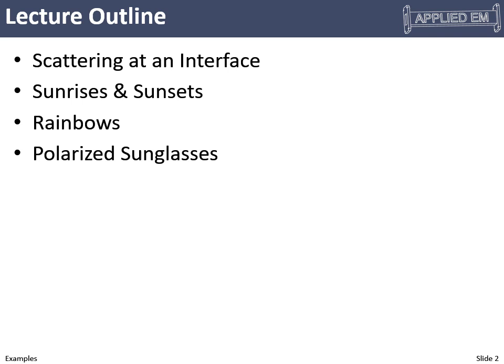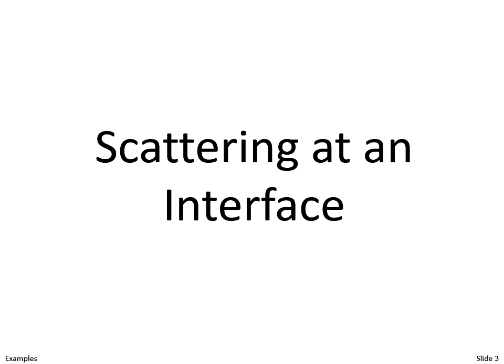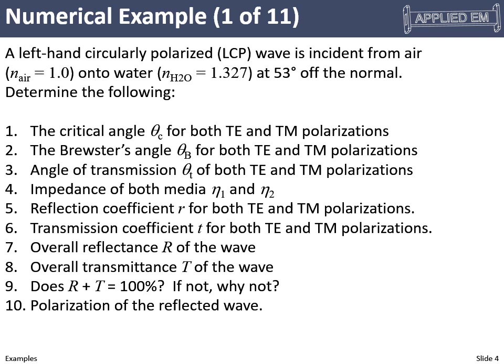How much reflects, how much transmits, critical angle, Brewster's angle, all this sort of stuff. Once we get through that, I have a few more fun examples to explain why we have sunrises and sunsets — we're now in a good position to understand stuff like that — rainbows, and polarized sunglasses. So our first example will be rather mathematically intense: scattering at an interface.